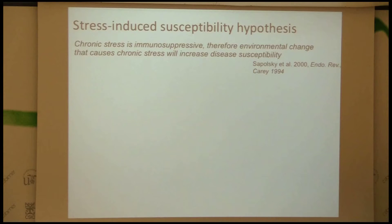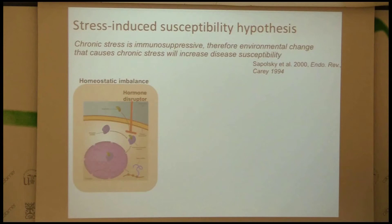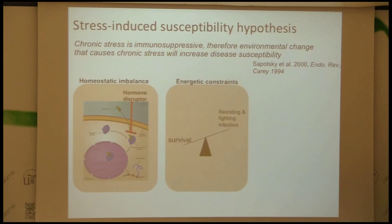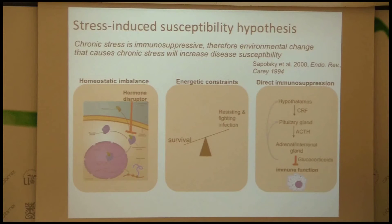We think that environmental change would be associated with increased severity of disease in natural populations, but there's been very little evidence to actually link these in natural populations. This is the hypothesis we were going to test: you can end up with immunosuppression through homeostatic imbalance due to chronically altered physiological states caused by a non-lethal stressor. There could be energetic constraints where you don't have enough stored energy to deal with the immune response, and then direct glucocorticoid-mediated immunosuppression through apoptosis of immune cells.